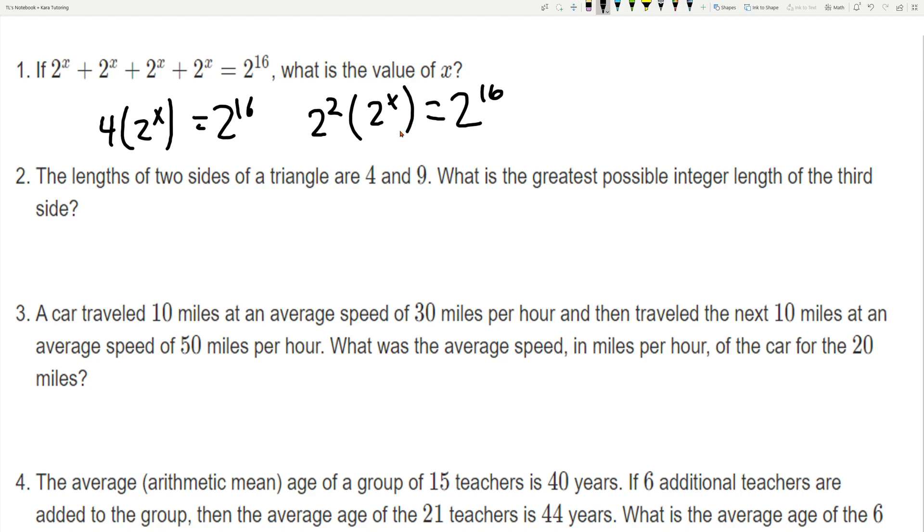Now you want to isolate this 2 to the x because that's where you're trying to find the x. So what you want to do is divide by 2 to the second power on both sides and when you divide exponents, when you divide numbers with different exponents on the same base you just subtract them. So it's going to be 2 to the x is equal to 2 to the 14th and x is just going to be the exponent, the number of this exponent so that's just going to be 14.